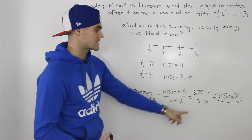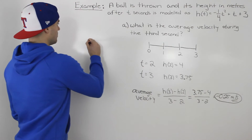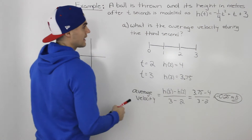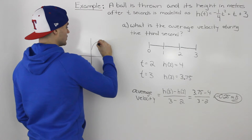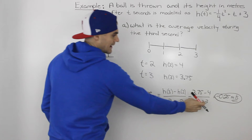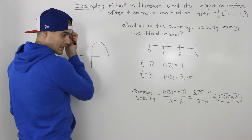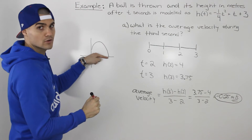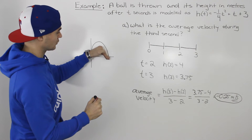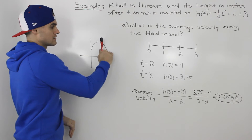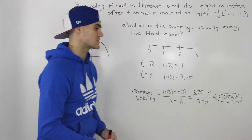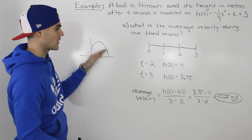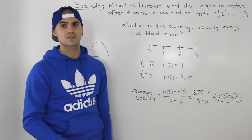One more thing: why is it negative? A ball is thrown in the air and it's modeled by a downward-opening parabola because of that negative a value. Because the average velocity is negative, we know that during the third second, on average, the ball is on its way back down to the ground — it is losing height. If it was on its way up, then the average velocity would be positive.